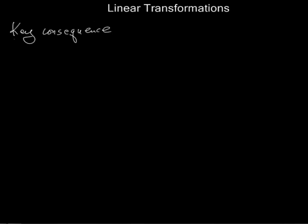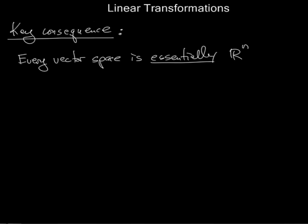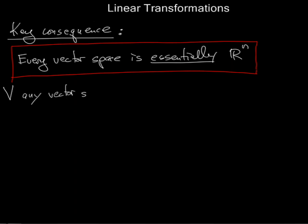Okay, so there's an important consequence of all of this, and in some sense this is one of the main reasons I'm talking about all of this. Every vector space is essentially R^n. And this is an important concept. What do I mean by essentially R^n? Well, the point is that the concept of a linear transformation makes this clear and precise. Suppose I have a vector space V.